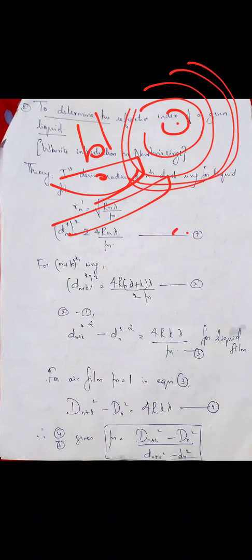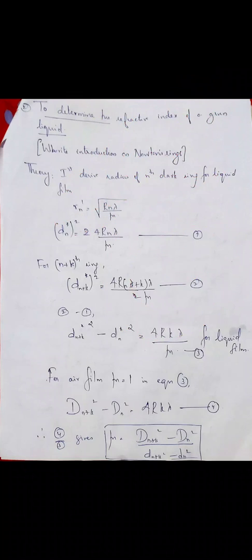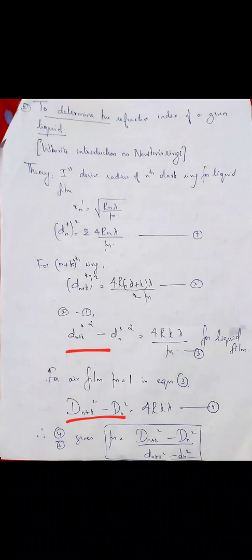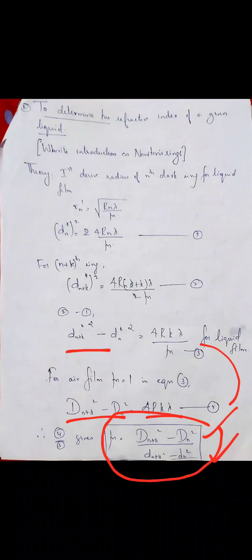When you use the Newton's rings arrangement with an air film and then replace it with a liquid film, in both cases you get alternate dark and bright rings, but the diameters will be very different. Dividing the air film equation by the liquid film equation, the refractive index is: μ = (D_(n+k)² − D_n²) / (d_(n+k)² − d_n²). The theory is now clear.